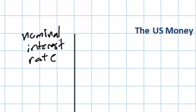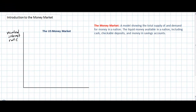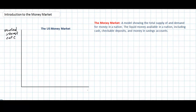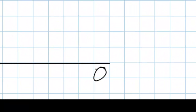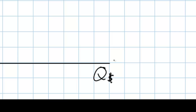If you're saving money, the nominal interest rate represents the percentage you will receive for your savings on an annual basis. If you're a borrower, it represents the percentage you will pay above and beyond the principal you borrowed. So the nominal interest rate is, in a way, the price of money. The horizontal axis represents the quantity — in this case, the quantity of US dollars, since we're looking at the United States money market.